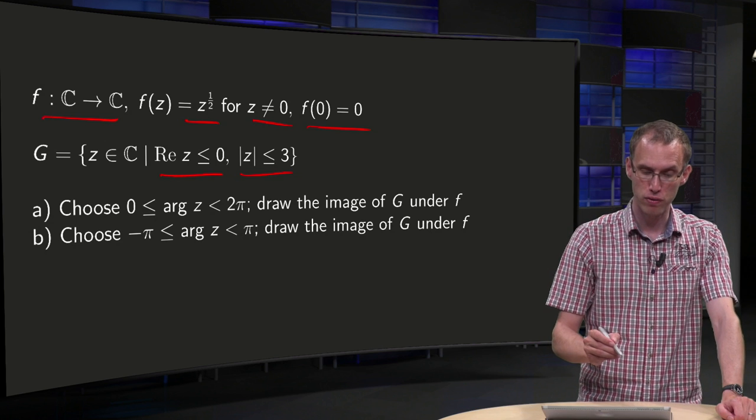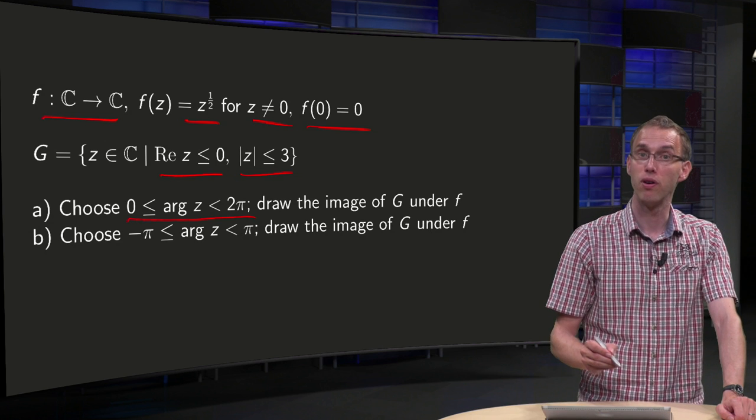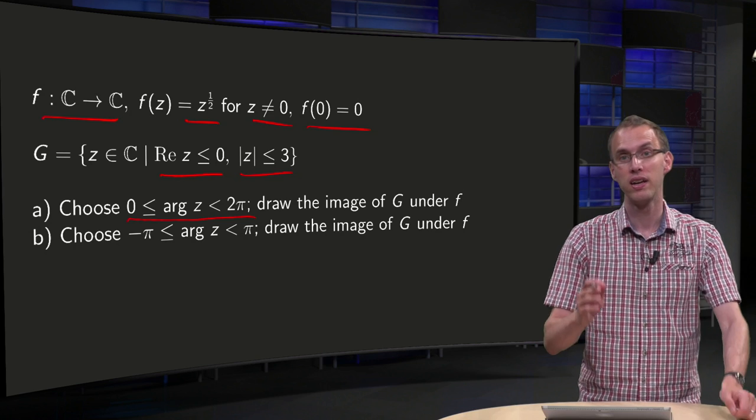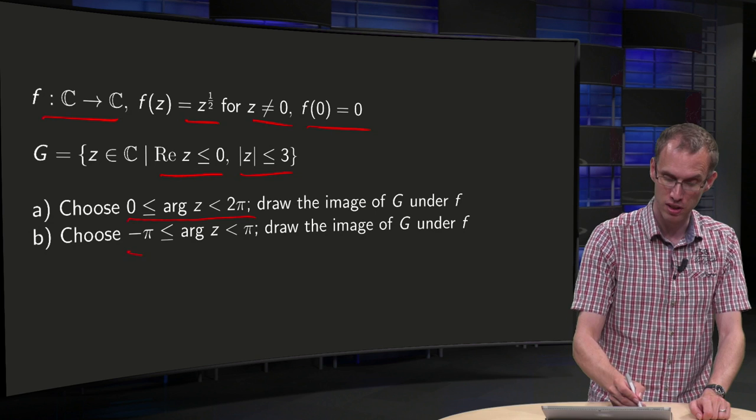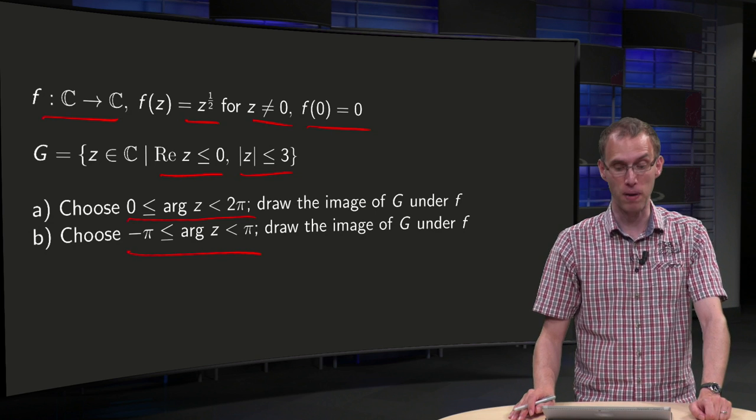And then first of all we set the argument of z to be between zero and two pi, we have to draw the image of G under f and then same question where we set the argument of z between minus pi and pi.